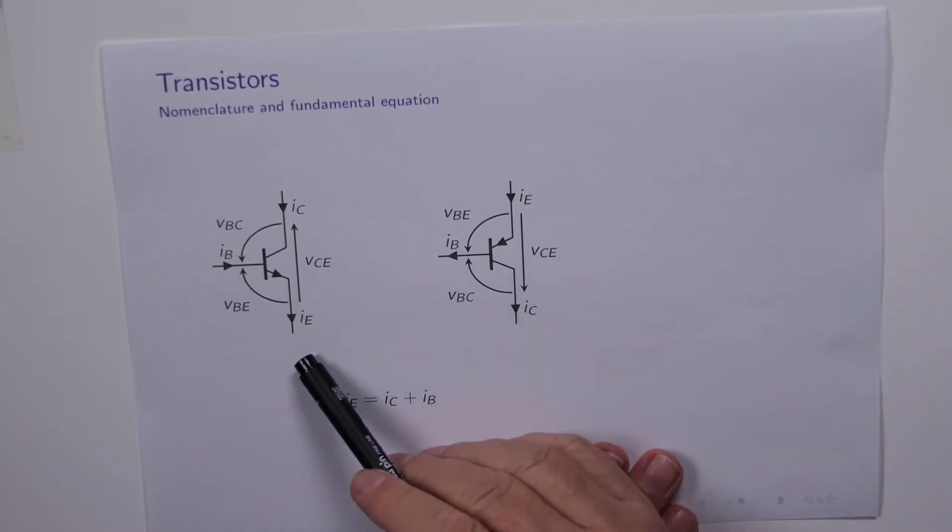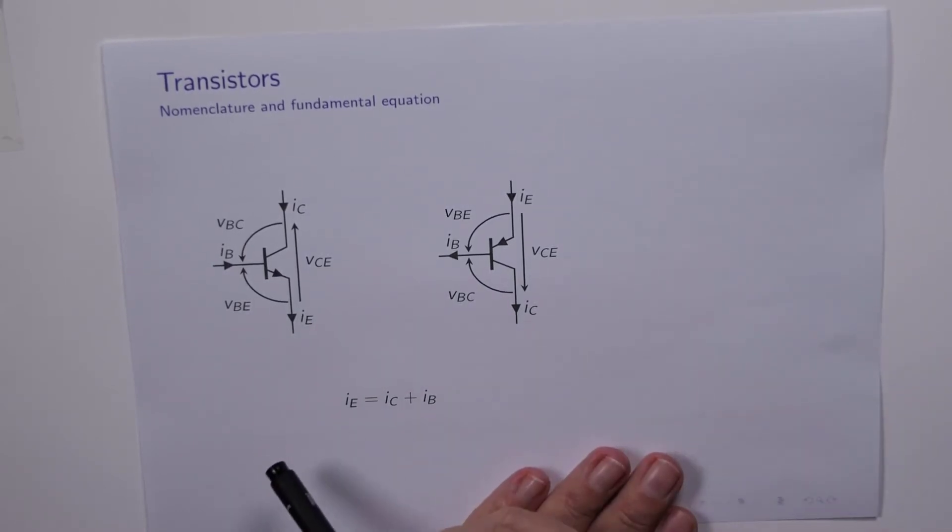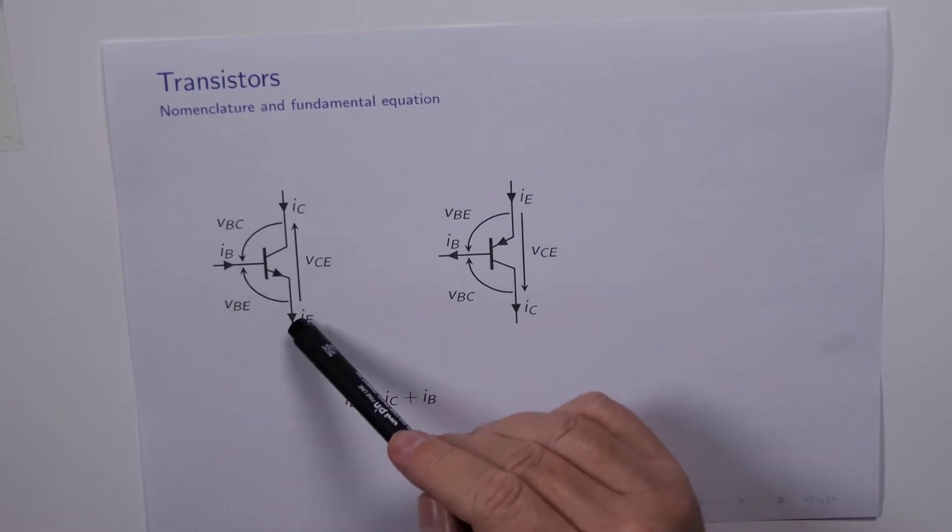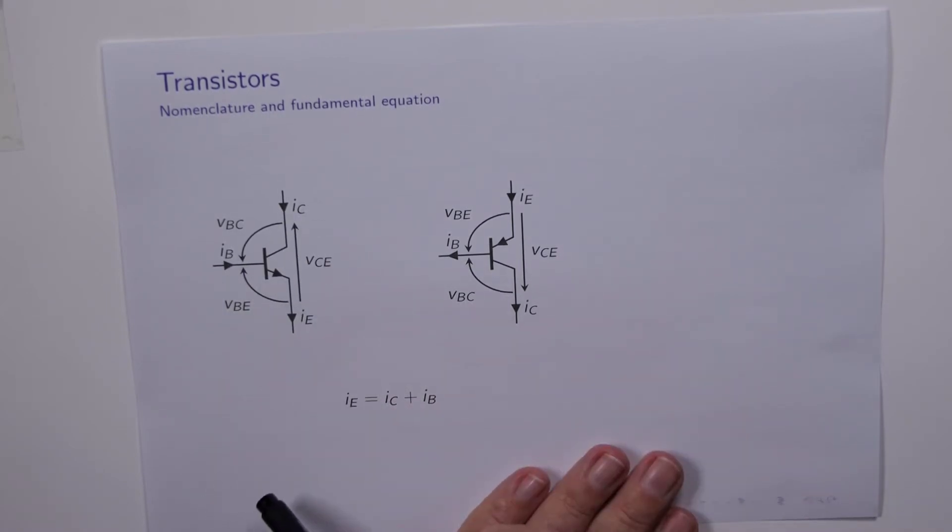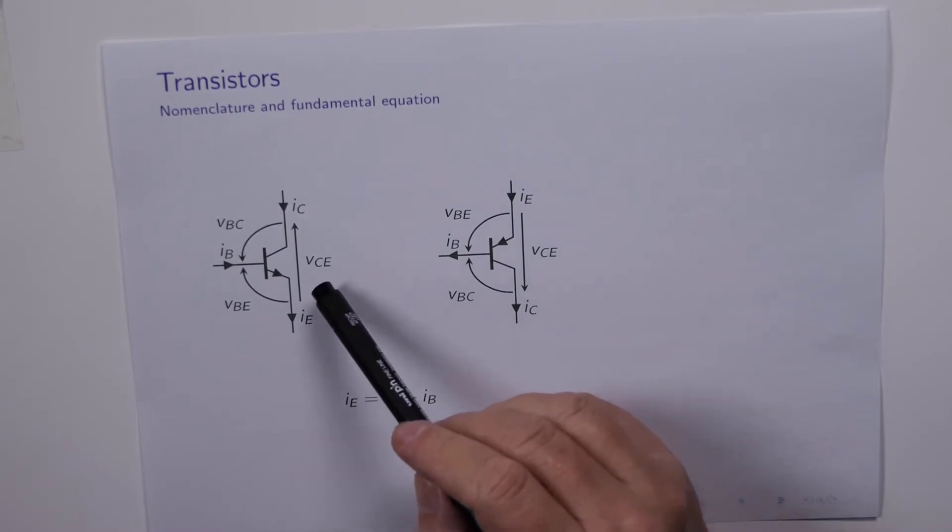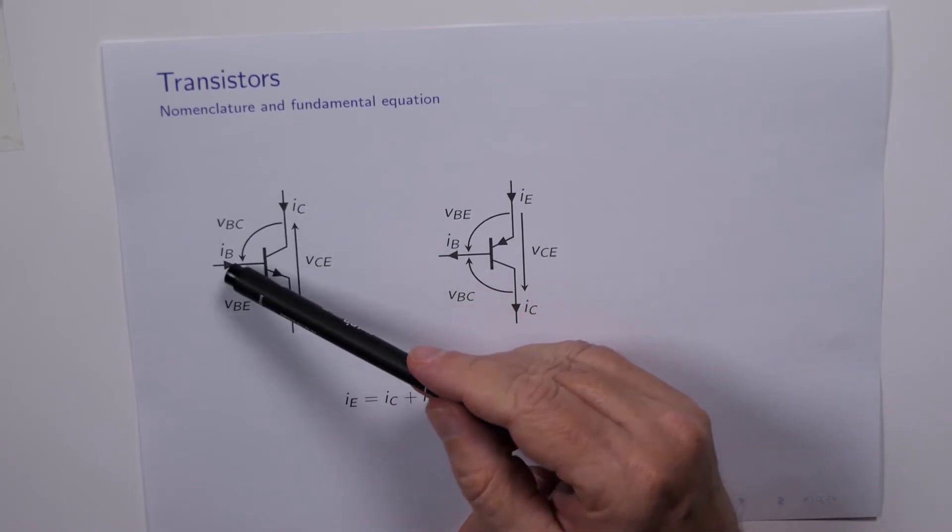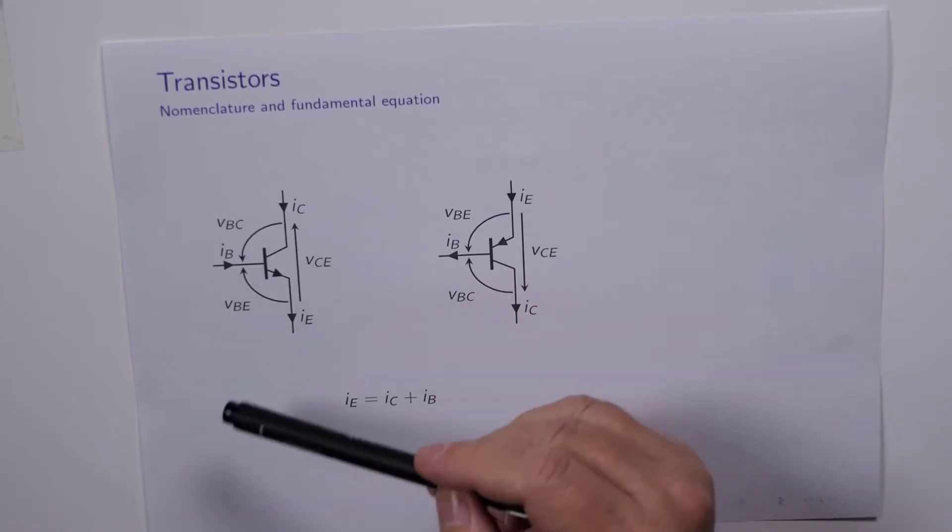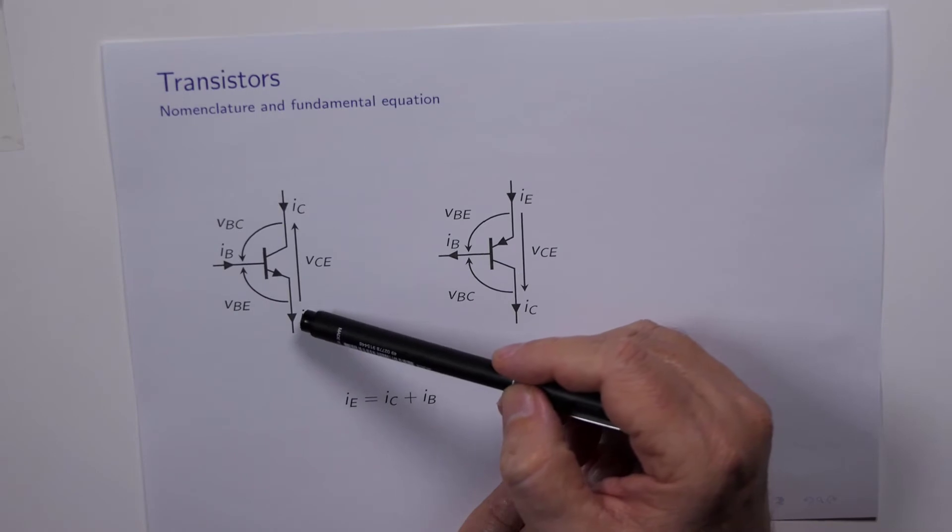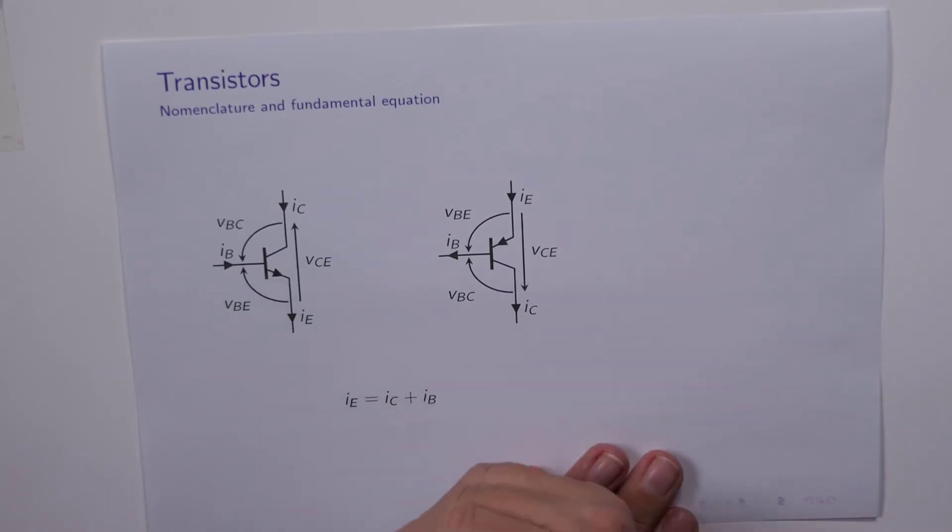NPN transistor on the left, PNP on the right. We've got three terminals so we can have three currents and therefore three terminal voltages. Each of the collector and base have the current flowing into the device, and the emitter has the current coming out of the device.